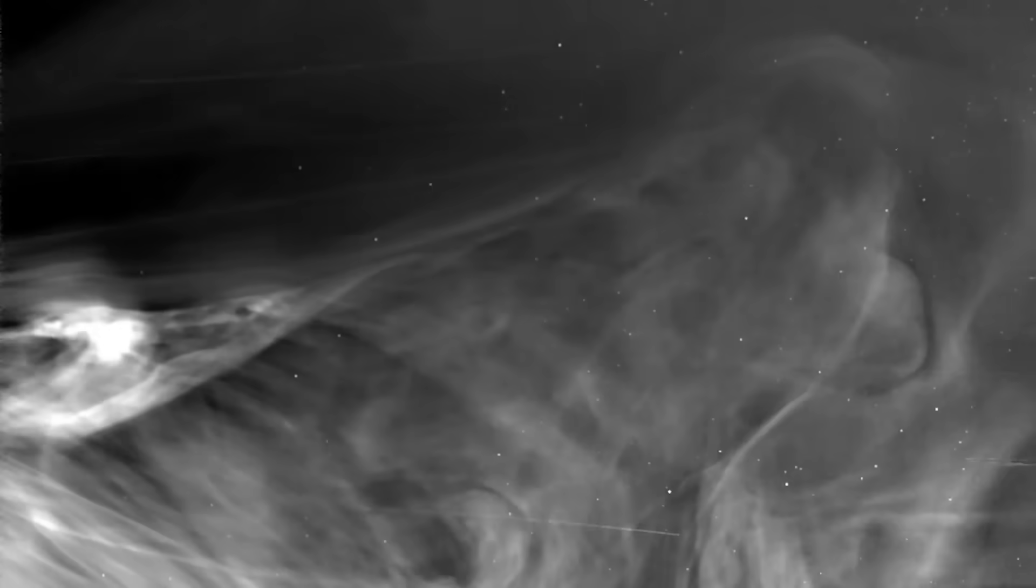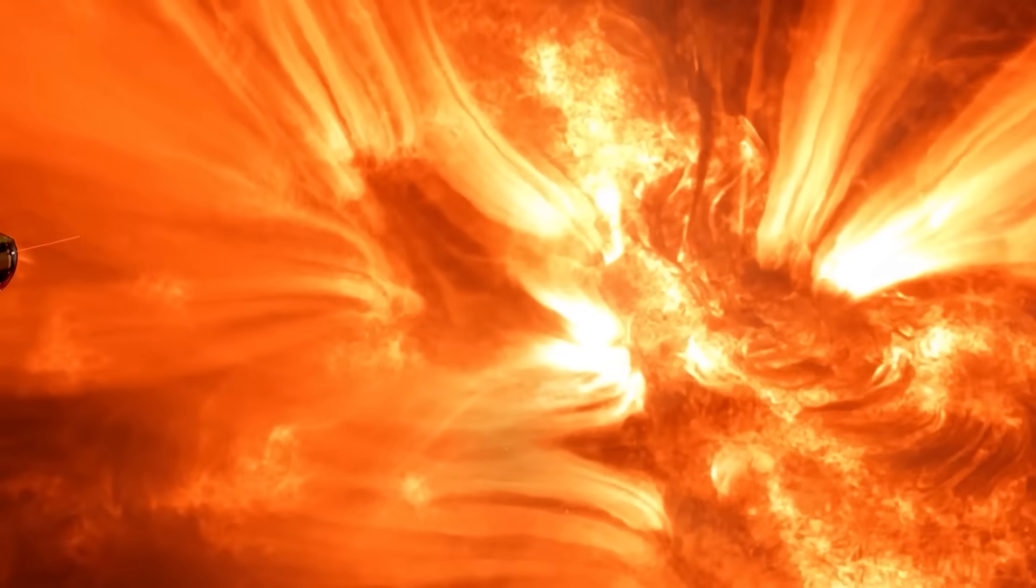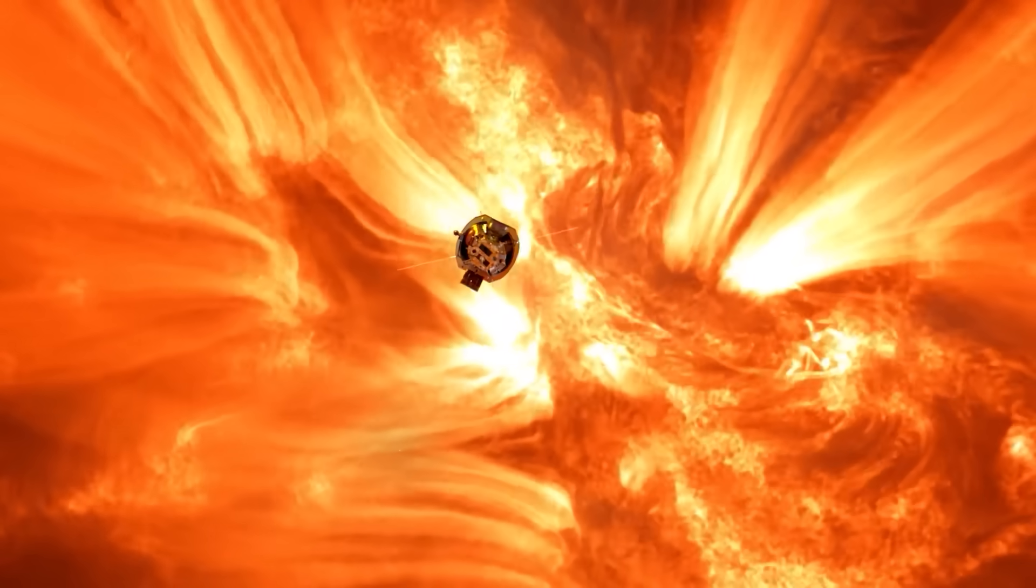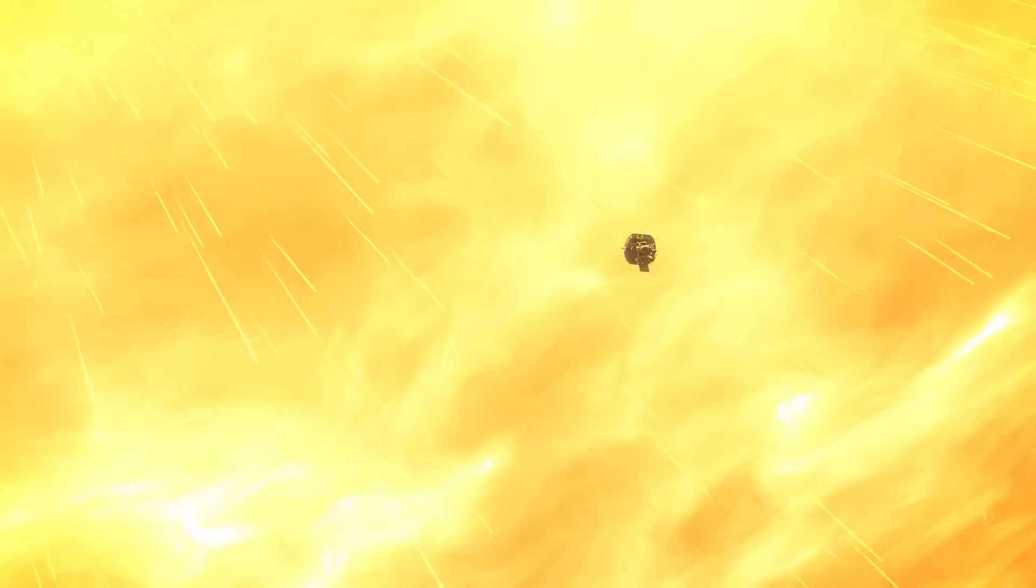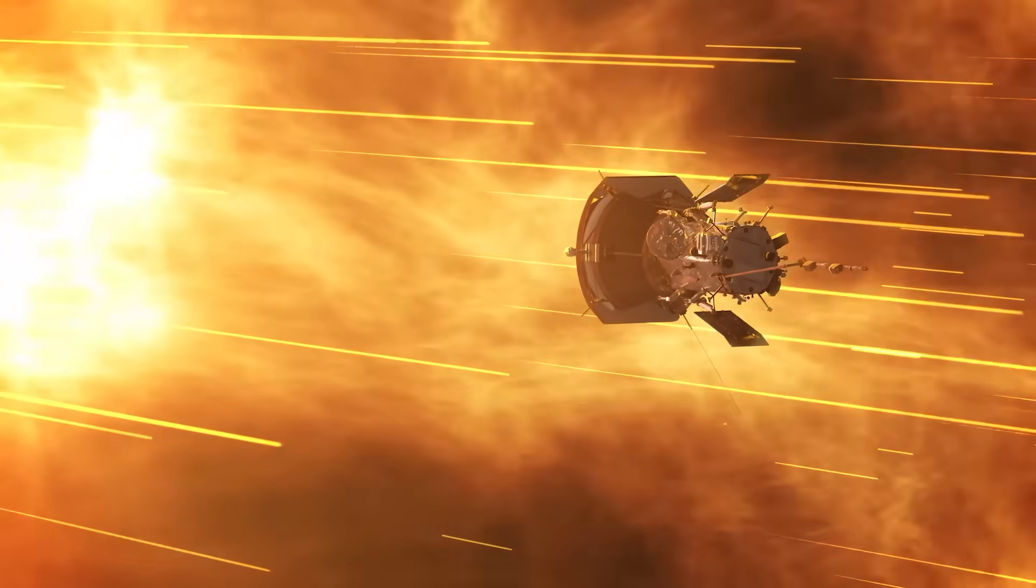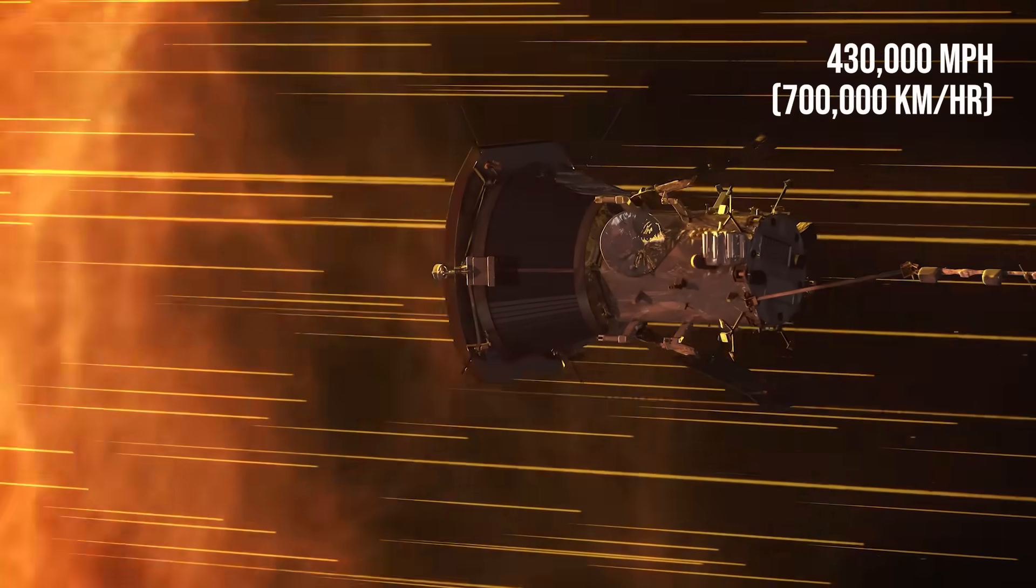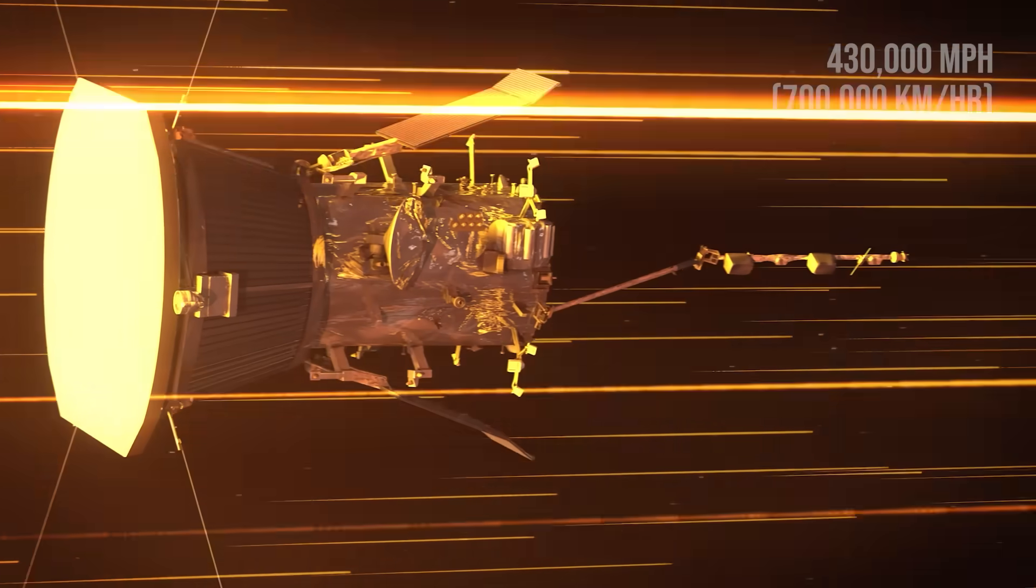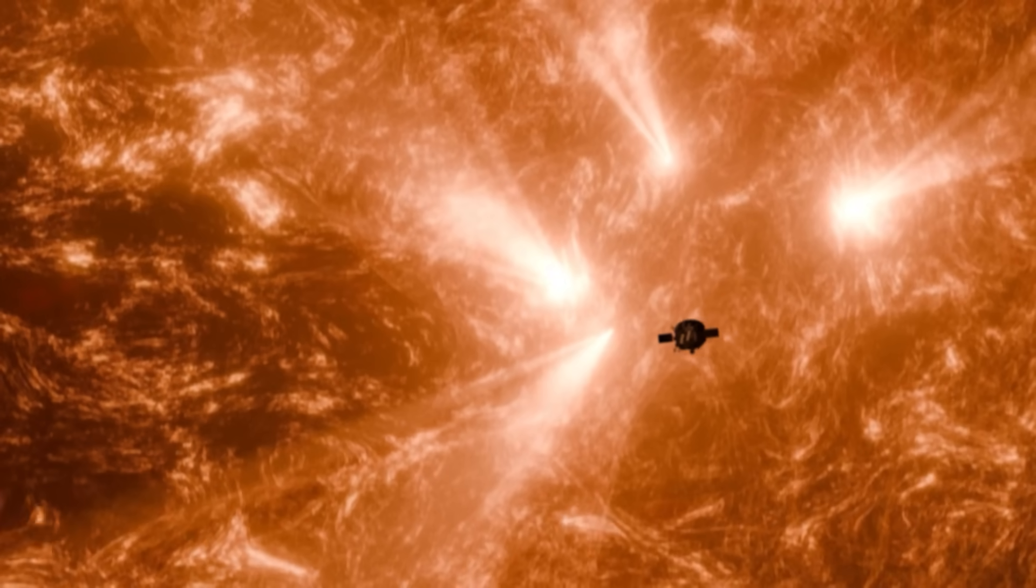You're looking at the closest images of the Sun ever captured. On Christmas Eve 2024, NASA's Parker Solar Probe made history. It became the fastest object ever built by humans, zipping through space at a jaw-dropping 430,000 miles per hour or 700,000 kilometers per hour.